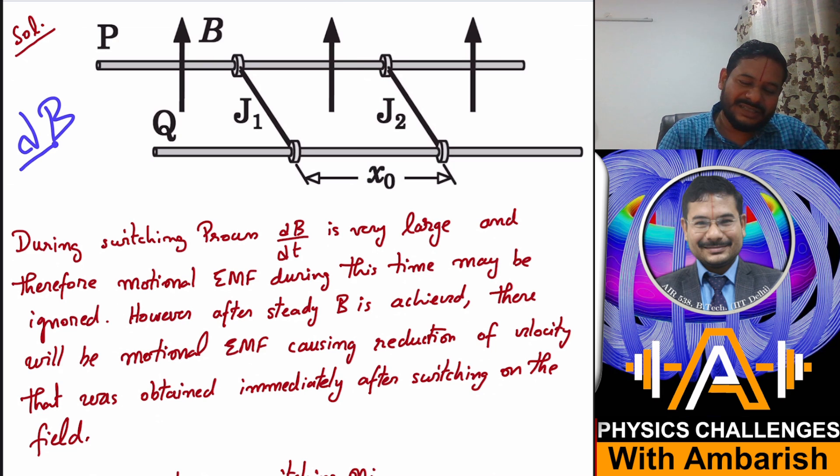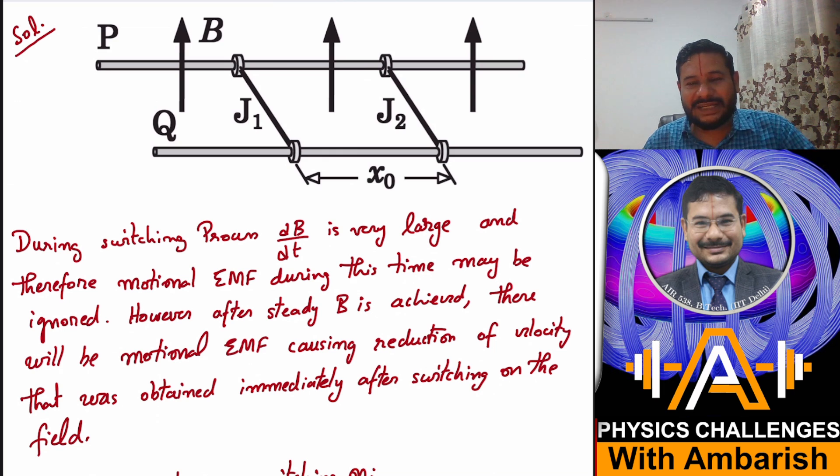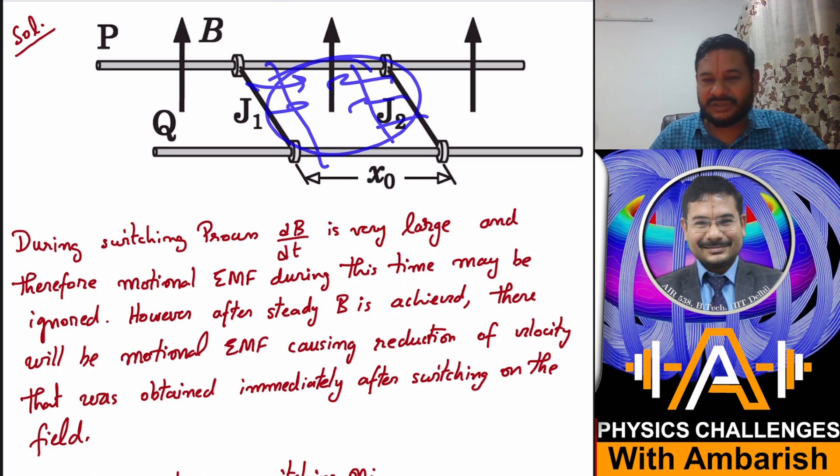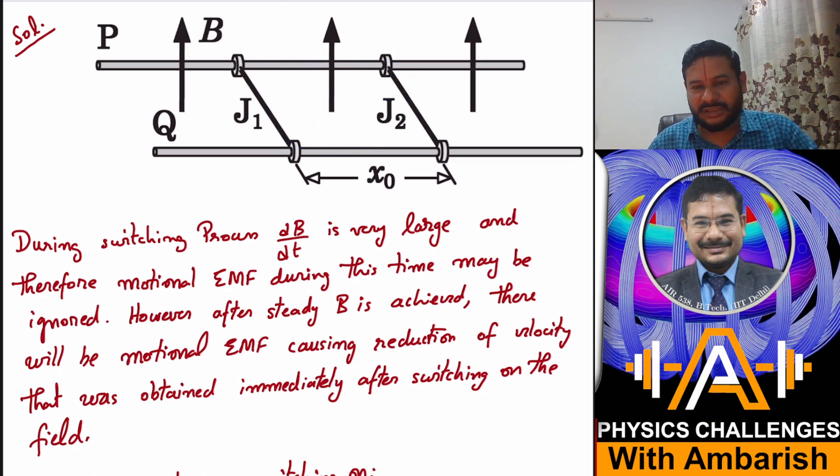You have to assume almost sudden increase of field. Now why is that significant? The flux through this loop can increase because of two reasons: one is due to the change in magnetic field, and another is if these jumpers start moving with some velocity, then the area of this loop also keeps changing. So there can be two sources of EMF - the motional EMF and the one due to B dot.